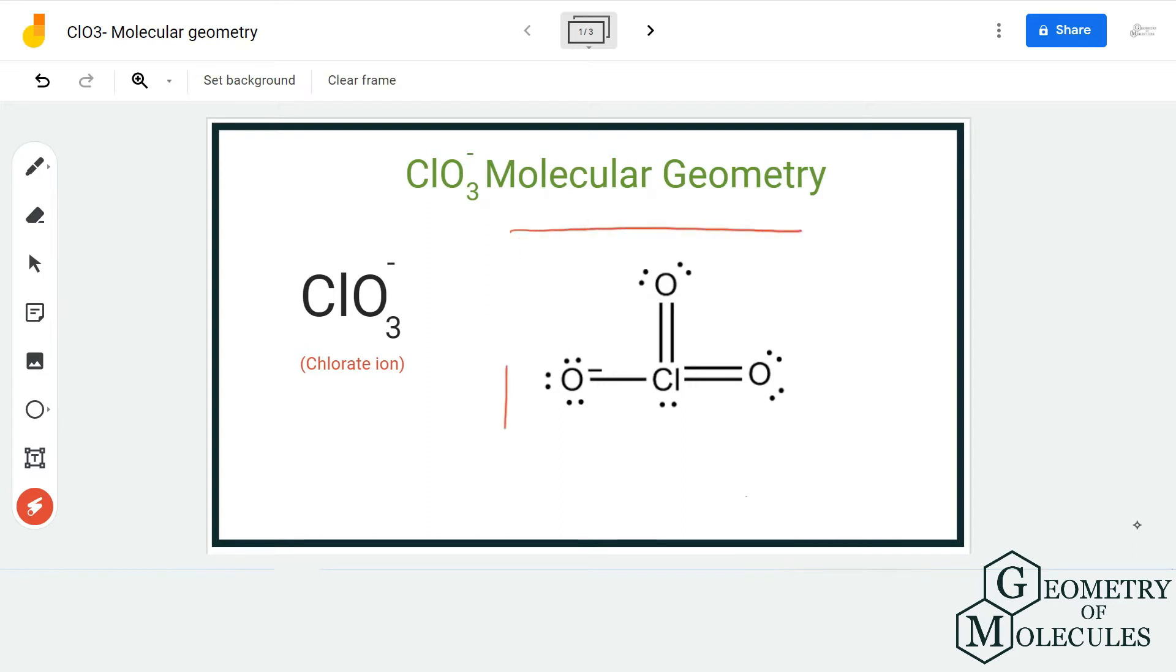If you look at this Lewis structure, chlorine atom is in the center and it forms two double bonds with two oxygen atoms, one single bond with this oxygen atom, and has a lone pair of electrons.